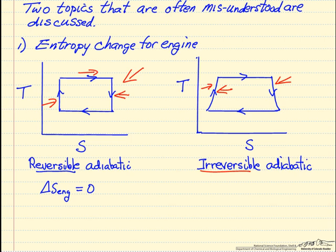We're going around reversible steps, always going back to our initial point. However, the entropy change for this engine where we have irreversible adiabatic steps is also 0, because as we go around this cycle, we always come back to this exact same point. So even though the adiabatic steps are irreversible, the entropy change for the engine is 0, because it's a cycle — entropy is a state function.